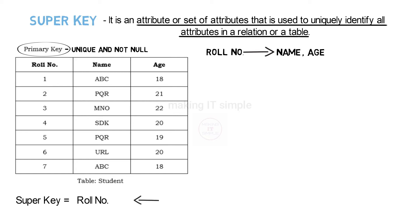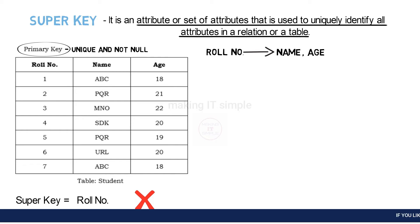Now is it done? Is there just one super key in a table? The answer is no — there can be multiple super keys in a relation or table. Let us find other possible super keys in this example.